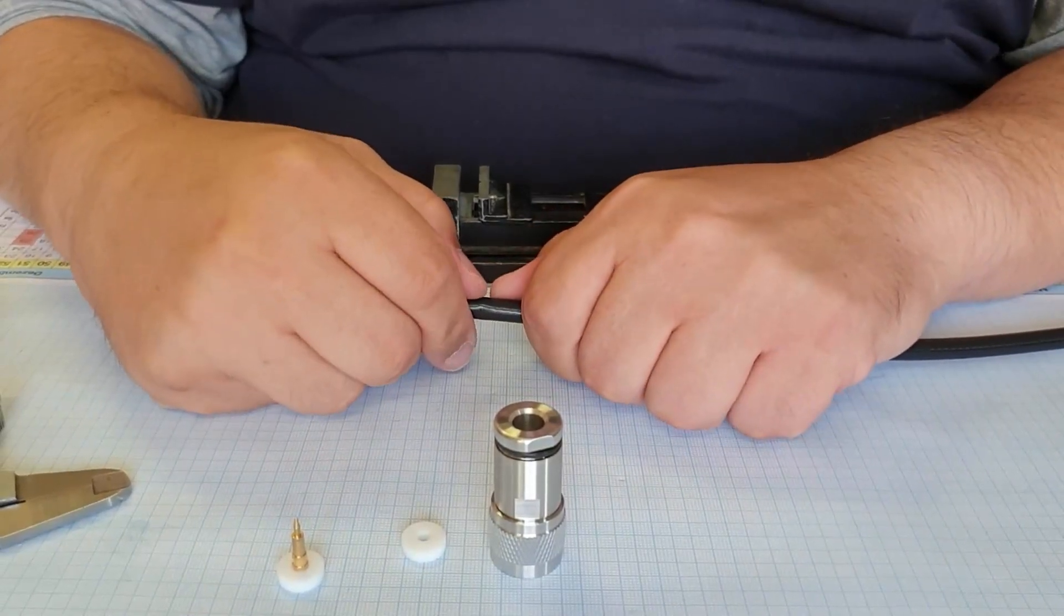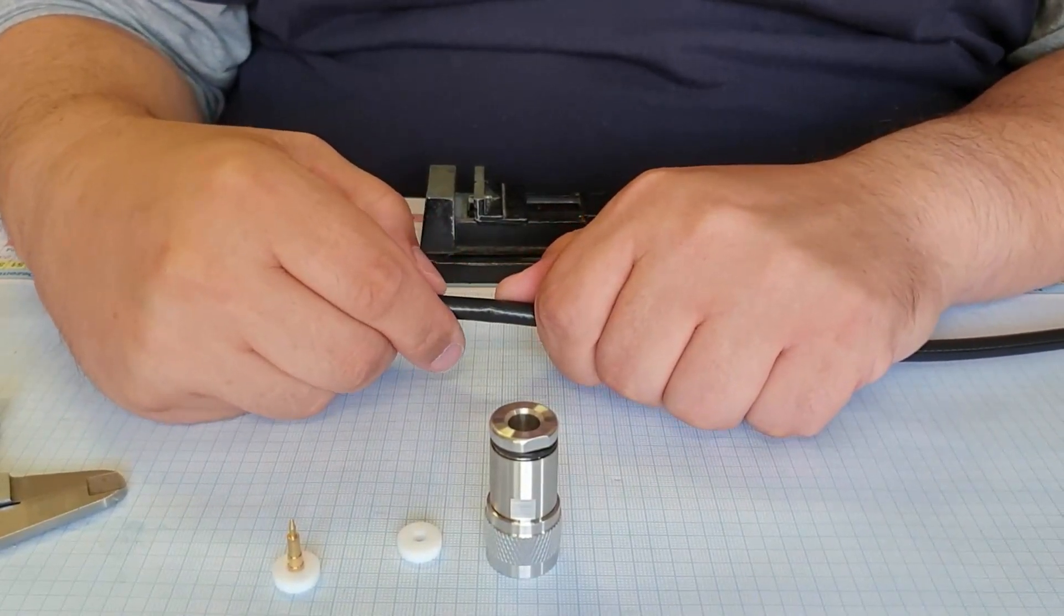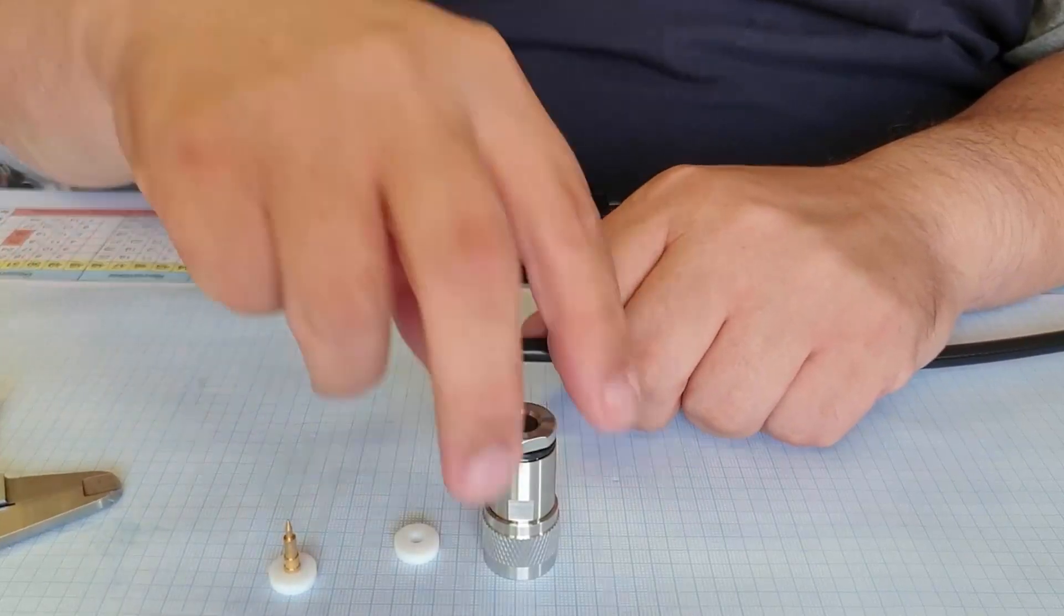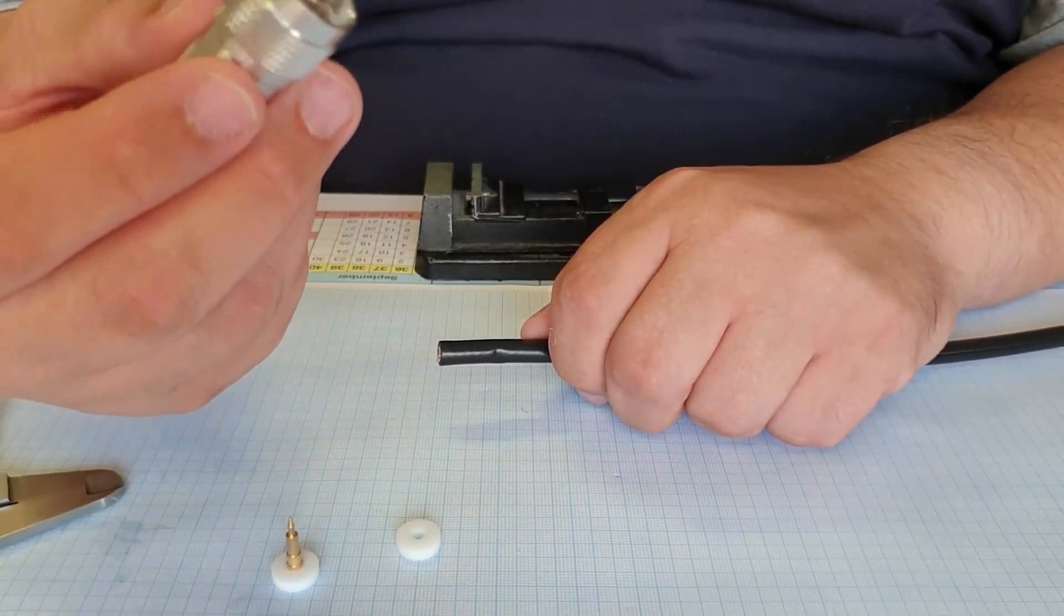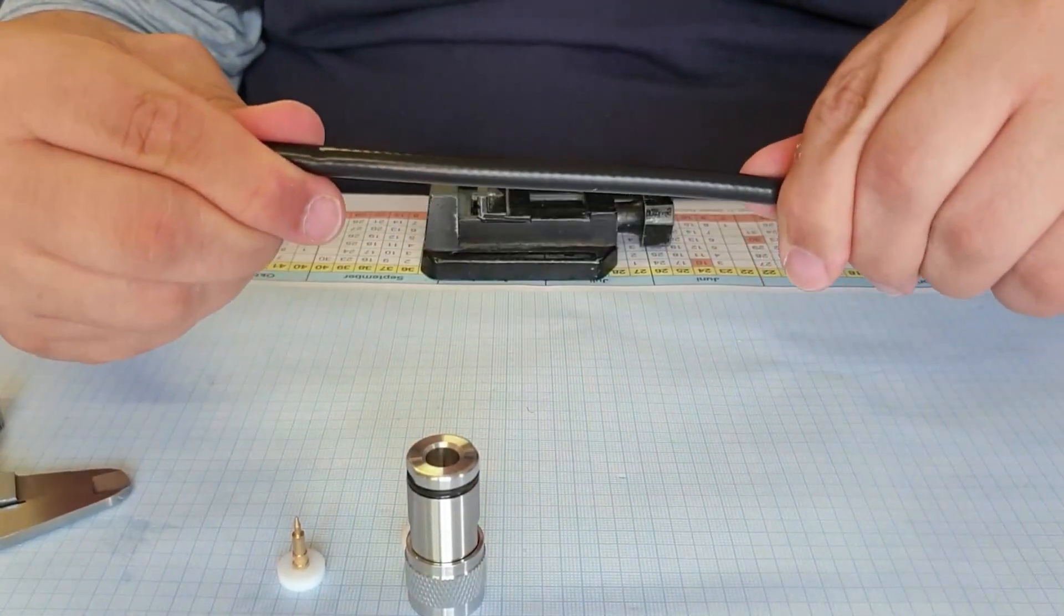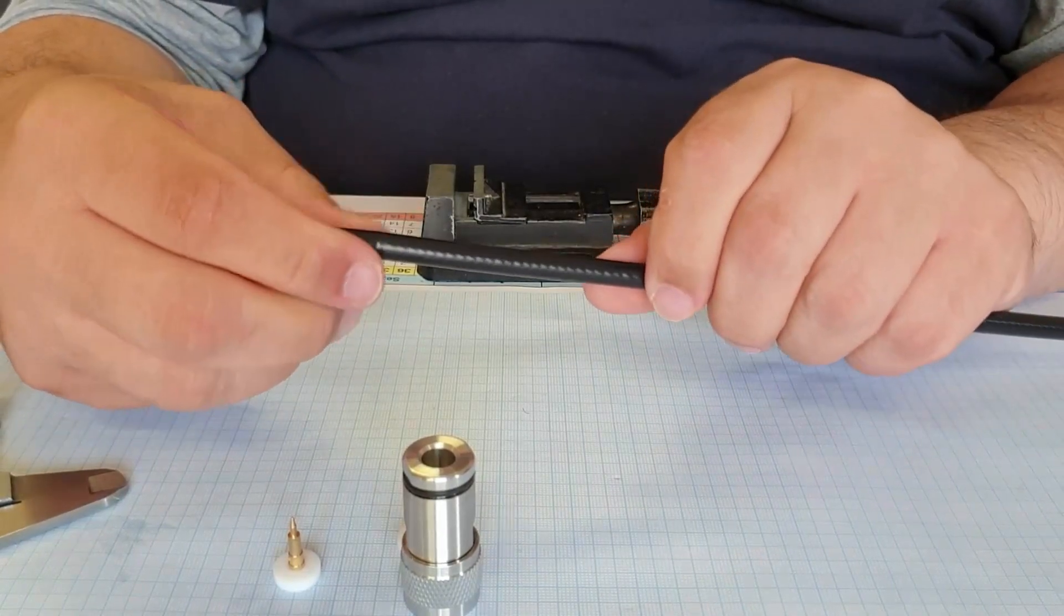Hello everybody, this is Dennis from Bonito. Today I'd like to show you how to mount an N-Type connector to an Ultraflex 7 cable from Messi & Paoloni, which is a 7mm cable.